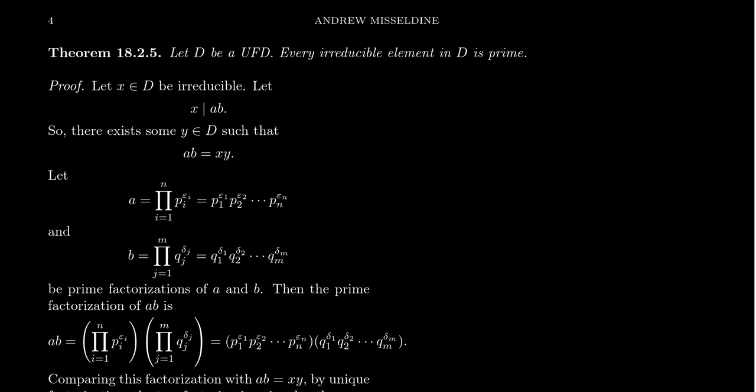So let's see the proof of this thing. So we're going to take an element x inside of the UFD and suppose it is irreducible. So every factorization of x involves a unit to some degree.